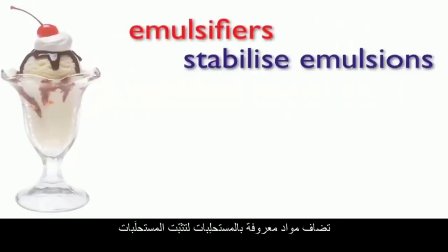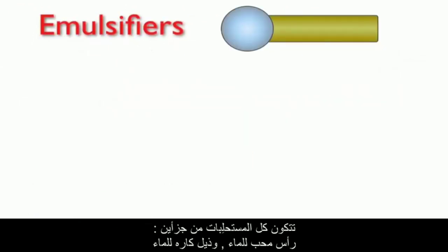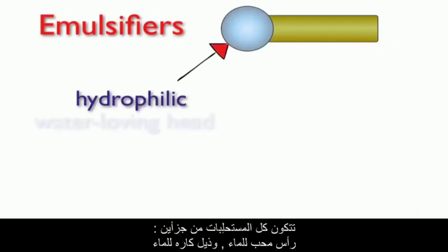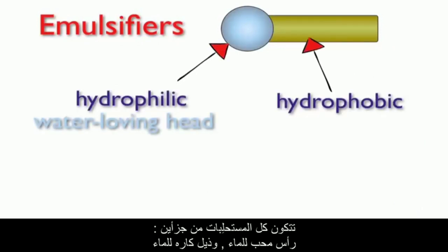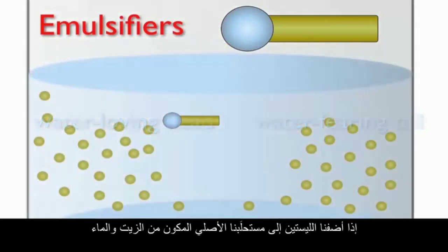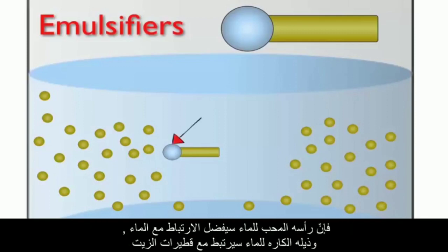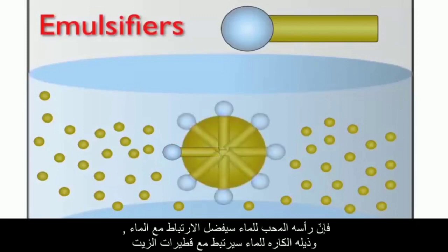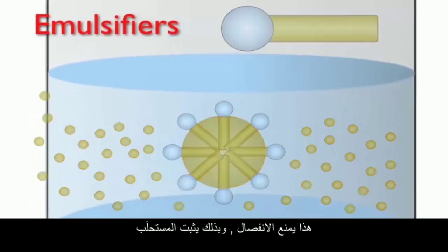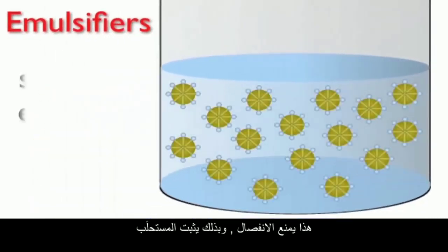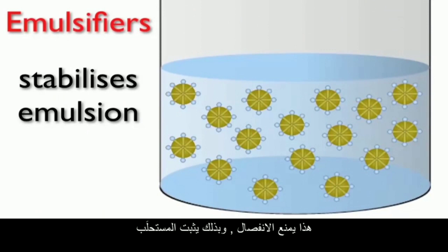All emulsifiers have two components: hydrophilic and hydrophobic. If we add lecithin to an oil-in-water emulsion, its hydrophilic head will prefer to associate with water and its hydrophobic tail with the oil droplet. This prevents separation and stabilizes the emulsion.